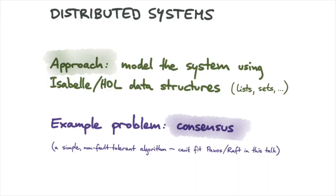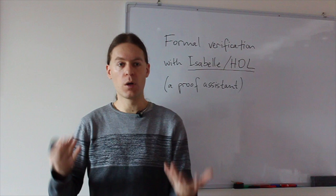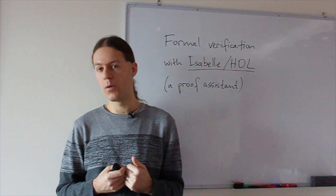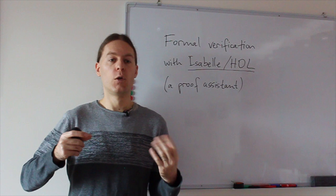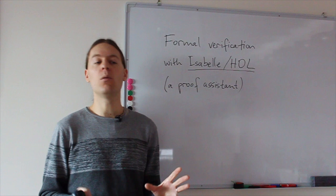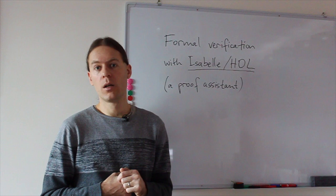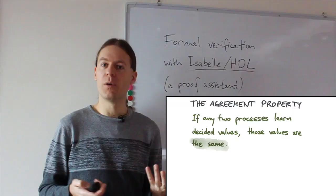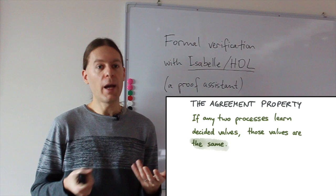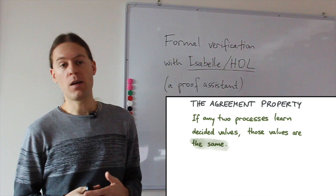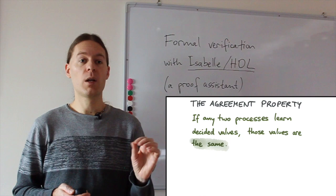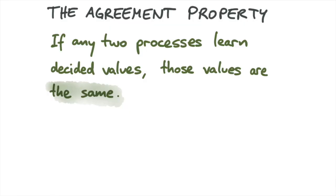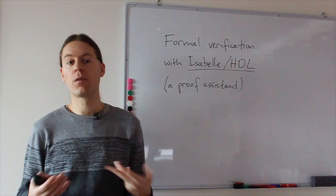The particular algorithm I want to formalize today is a consensus algorithm. Consensus is a core problem in distributed systems where you want to get several processes to agree on some value. Famous algorithms include Paxos and Raft, but we don't have time to cover those here, so I'll use a simpler consensus algorithm as a demonstration. This algorithm is not very fault tolerant, but it does achieve the agreement property, which is the main property that needs to hold. To prove any algorithm correct, you need to define what correct means, and in consensus one of the main properties we care about is agreement: if any two processes decide a value, those values must be the same.